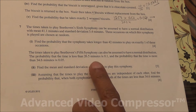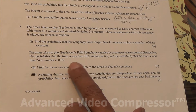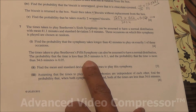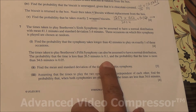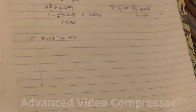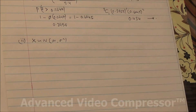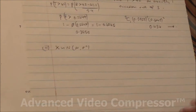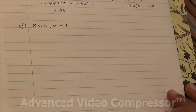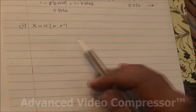We have two probability conditions. First, P(X < 26.5) = 0.1. Second, P(X > 34.6) = 0.05. We define X ~ N(mu, sigma^2) and will use both conditions to set up simultaneous equations.